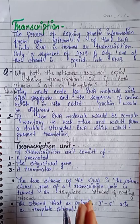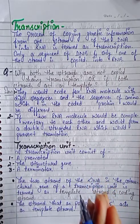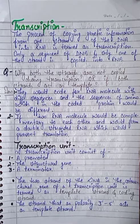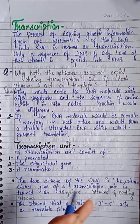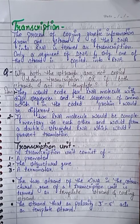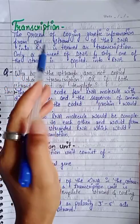Hello friends, we are doing the chapter Molecular Basis of Inheritance. In the last video, part three of this chapter, we discussed semi-conservative DNA replication and the process of DNA replication. If you haven't seen part one, part two, and part three, you will find the link in the description box. Today we will study transcription. We have learned earlier about replication, and in the central dogma scheme, DNA replication is followed by transcription, where genetic information flows from DNA to RNA.